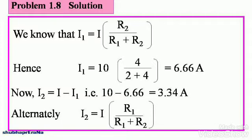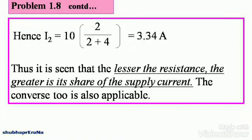Hence I2 is 10 minus 6.66 which is equal to 3.34 amperes. Alternately you can solve with the same formula for parallel resistors as I2 is equal to I into R1 divided by R1 plus R2. When you do this you should get the same answer because I2 would be equal to 10 into 2 divided by 2 plus 4 which is 3.34 amperes.